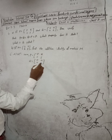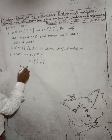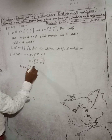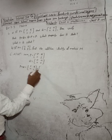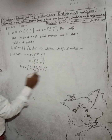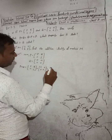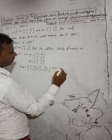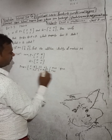So here P is equal to [p, q, r, s] and Q is equal to the zero matrix [0, 0, 0, 0, 0]. Now let's verify P plus Q. P plus Q means [p, q, r, s] plus [0, 0, 0, 0, 0], which gives us p plus 0, q plus 0, r plus 0, s plus 0.